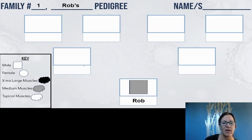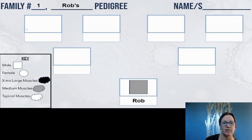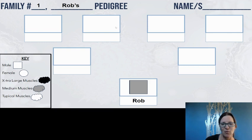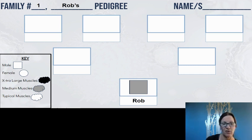You will sort out the rest of your cards and figure out the parents' phenotypes for muscles and the grandparents' phenotypes for muscles, and put all of that information into your pedigree chart. Once you're done, you will have each position filled out with the appropriate symbols representing both their sex phenotype and their muscle phenotype.